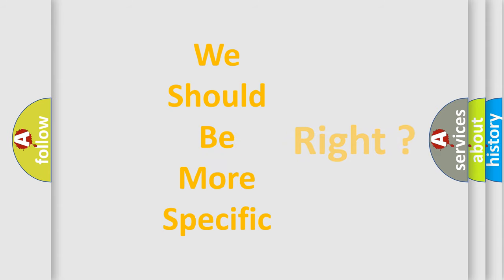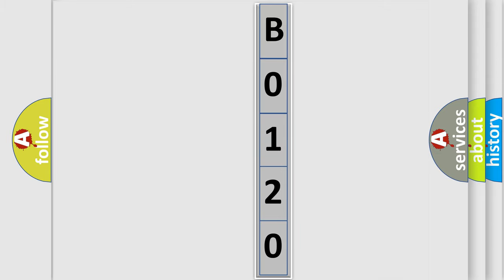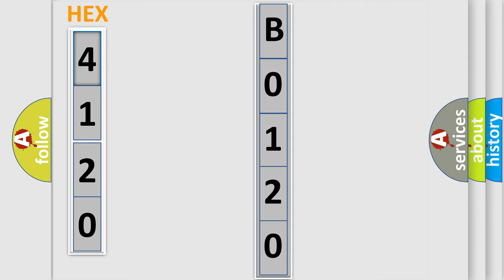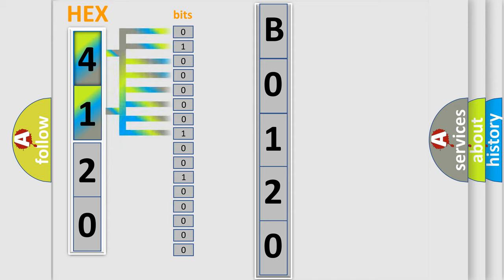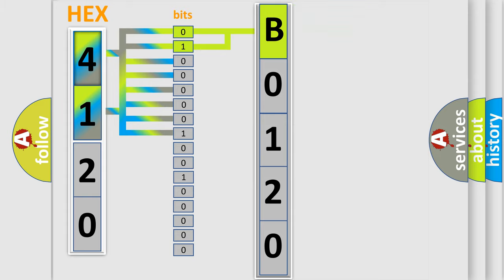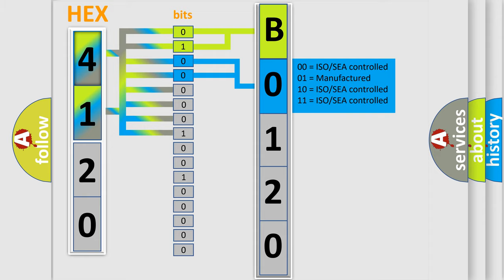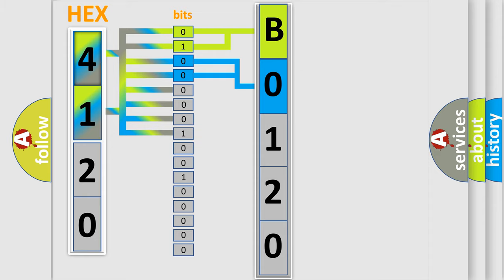The following demonstration will help you look into the world of software for car control units. The error code is split into two bytes consisting of 16 bits. One bit is the basic unit that each computer works with. The bit has two logical states: zero (low level) and one (high level). By combining the first two bits, the basic character of the error code is expressed. The next two bits determine the second character. The last four bits of the first byte define the third character of the code.